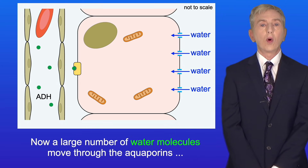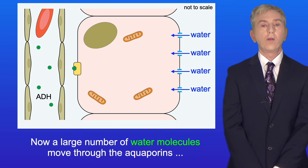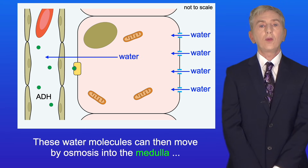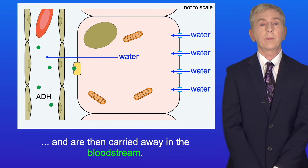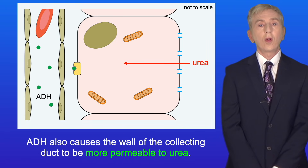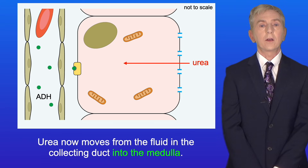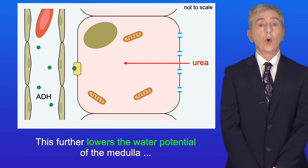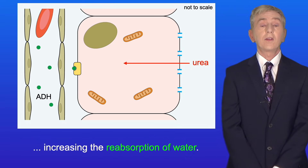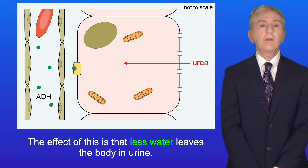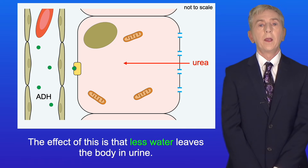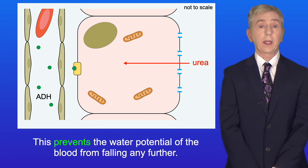A large number of water molecules now move through the aquaporins into the cell by osmosis. These water molecules can then move by osmosis into the medulla and are carried away in the bloodstream. ADH also causes the wall of the collecting duct to be more permeable to urea. Urea moves from the fluid in the collecting duct into the medulla, further lowering the water potential of the medulla and increasing the reabsorption of water. The effect of this is that less water leaves the body in urine, preventing the water potential of the blood from falling any further.